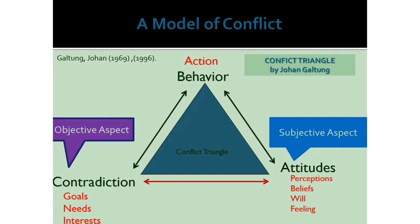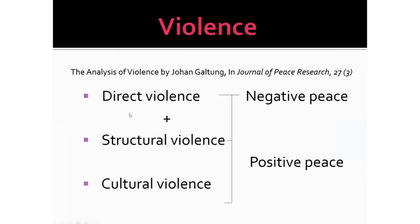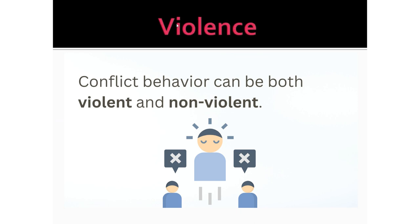Conflict behavior is not only violent. Conflict parties in the very beginning may start ignoring each other, stopping communication, or keeping distance. These are also conflict behaviors — not only violent ones such as hitting, kicking, or using arms, but also non-violent ones like stopping communication and ignoring each other.